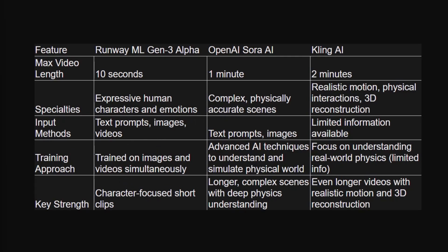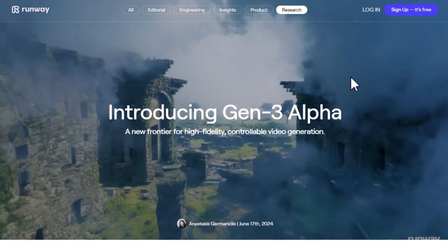All three tools are pushing the boundaries of AI video generation, and we're just getting started. Each has its own strengths: Gen 3 Alpha is great for shorter, character-focused clips; OpenAI Sora excels at longer, complex scenes with deep physics understanding; and Cling AI stands out for even longer video capabilities and realistic motion with 3D reconstruction. The choice between them really depends on the specific needs of your project and the type of content you want to create.